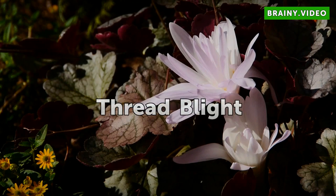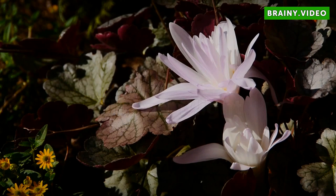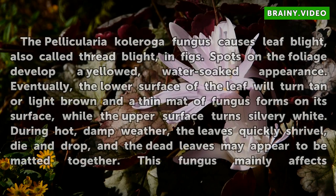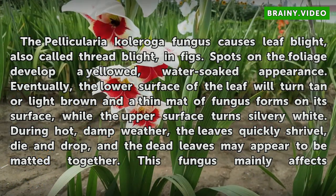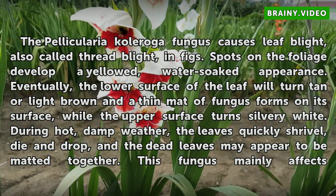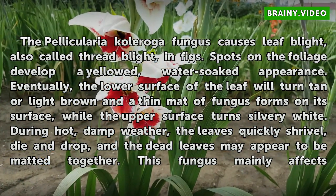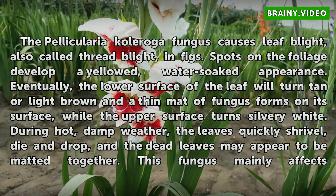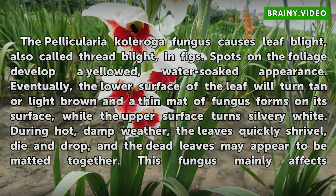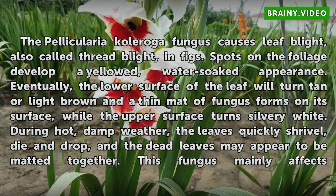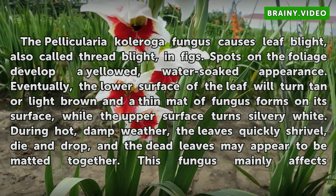The Pellicularia coleroga fungus causes leaf blight, also called thread blight, in figs. Spots on the foliage develop a yellowed, water-soaked appearance. Eventually, the lower surface of the leaf will turn tan or light brown and a thin mat of fungus forms on its surface, while the upper surface turns silvery white.